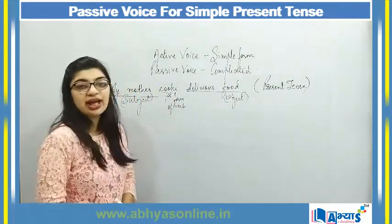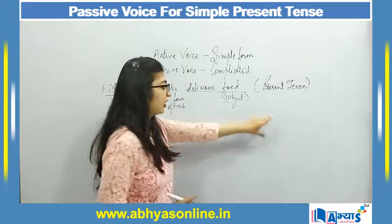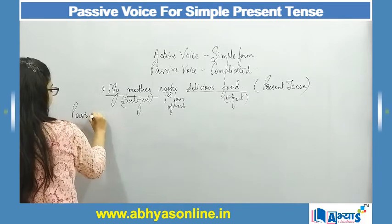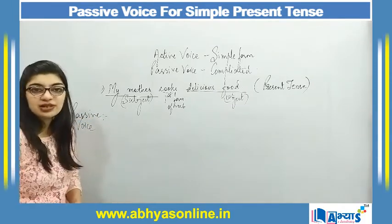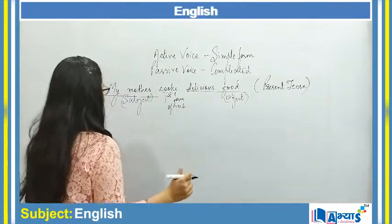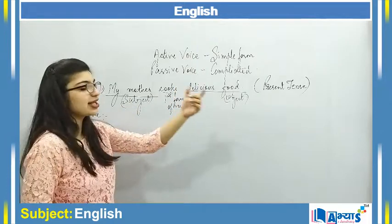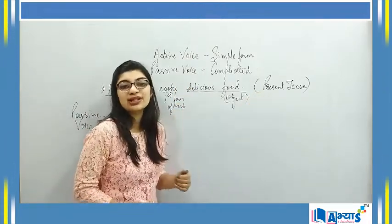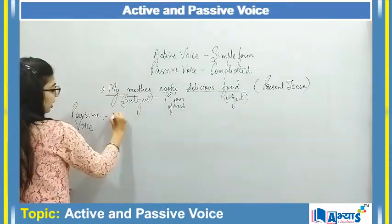You will always convert it into passive voice, but remember that your tense should not change. So if I convert it into passive voice, the rule of simple present tense is that the subject comes first. But since the active voice subject becomes the passive object, and the active object becomes the passive subject, 'delicious food' is the object in active voice, so I will start with 'delicious food.'